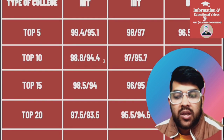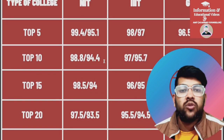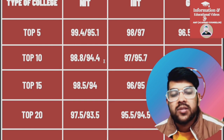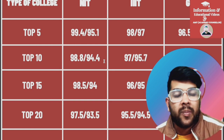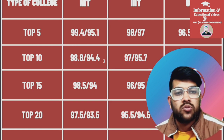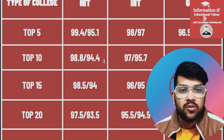So this was about OBC category — percentile versus OBC rank, and the minimum percentile to get into top 5, top 10, top 15, top 20 NITs, Triple IT, and GFTI. Very soon I will provide videos for other categories as well. If you are from another category, please type in the comment section so I can make that video soon on this channel.